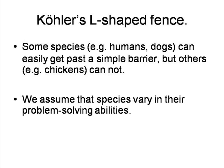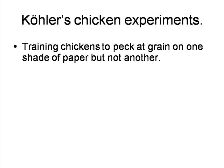In another set of experiments, Köhler constructed an L-shaped fence next to a wall and placed the reward on the far side. Here he examined the obvious variations in thinking abilities between species. A baby girl easily saw how to go around the barrier to get to the reward — in her case a doll — and similarly a dog could reach the food reward quite easily. By contrast, chickens were unable to solve the problem, and remained within the fence even though it was possible to reach the food.